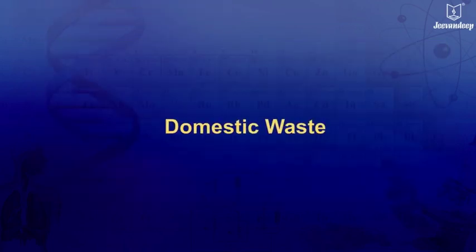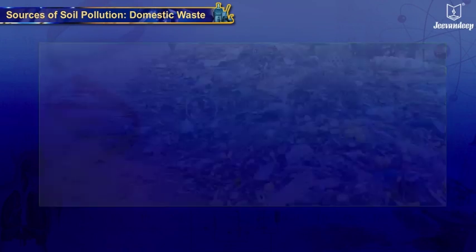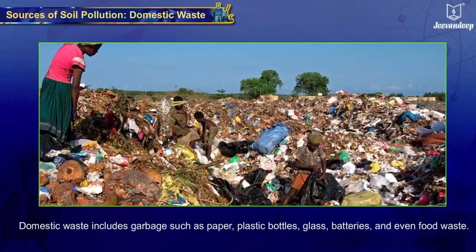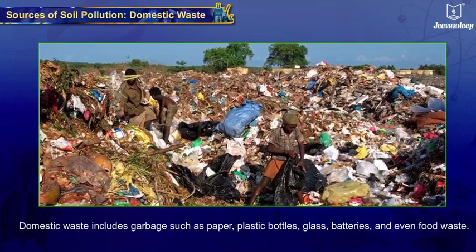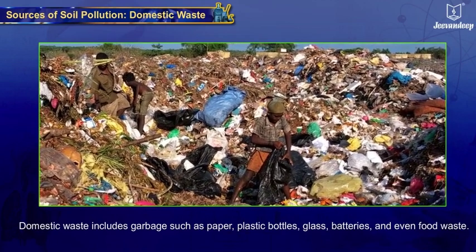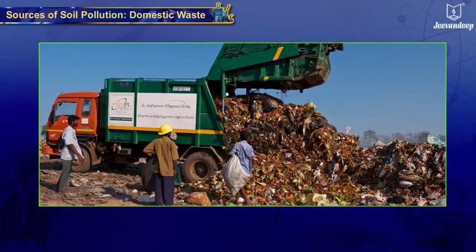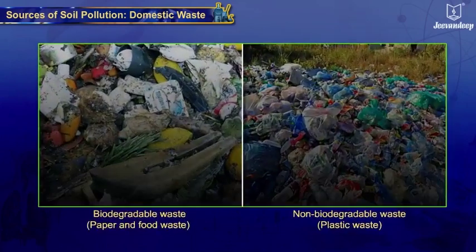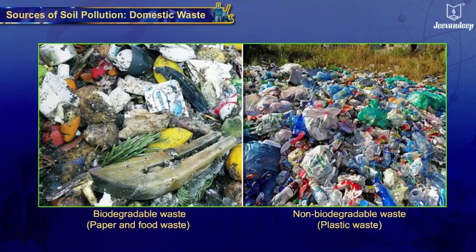Domestic waste — the waste generated in homes also finds its way to the soil. Domestic waste includes garbage such as paper, plastic bottles, glass, batteries, and even food waste. It is dumped in huge landfills outside cities. Paper and food waste are biodegradable, while plastic is non-biodegradable and remains in soil for long periods.